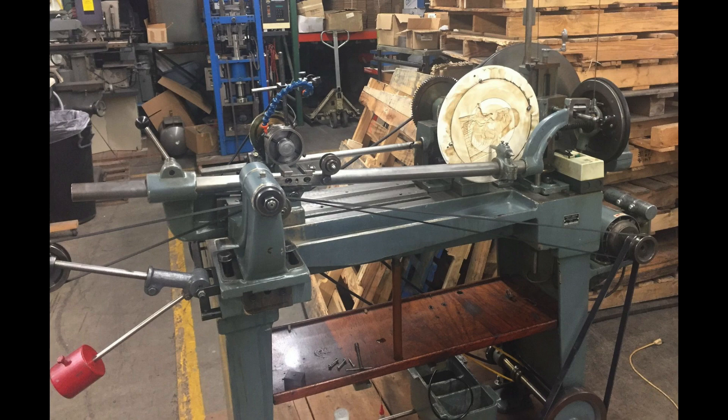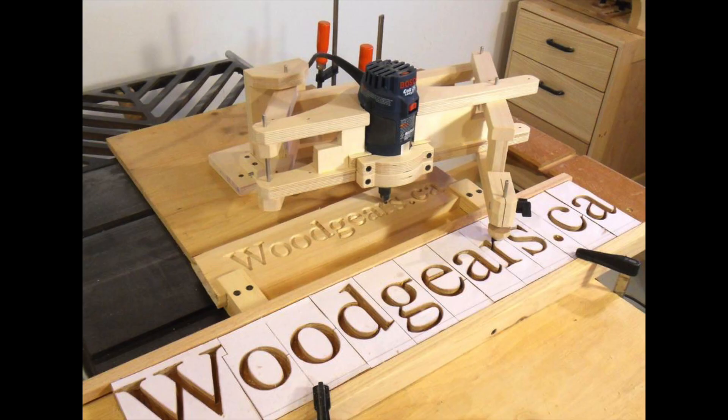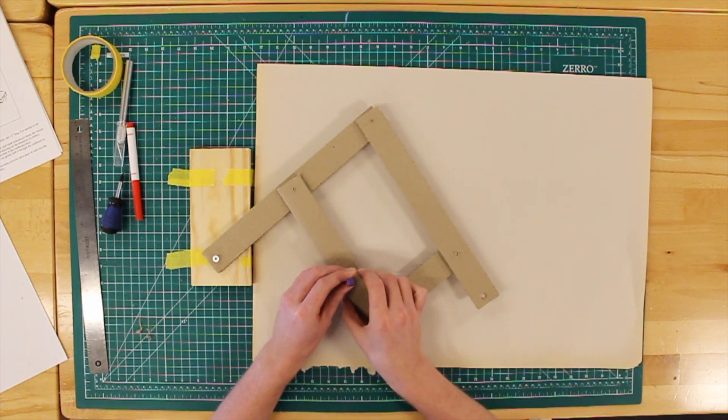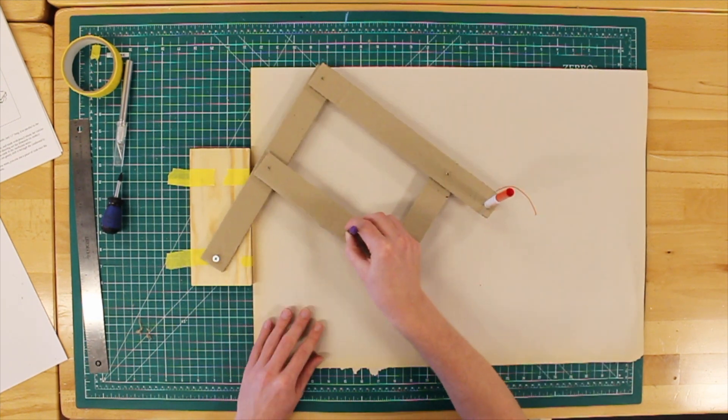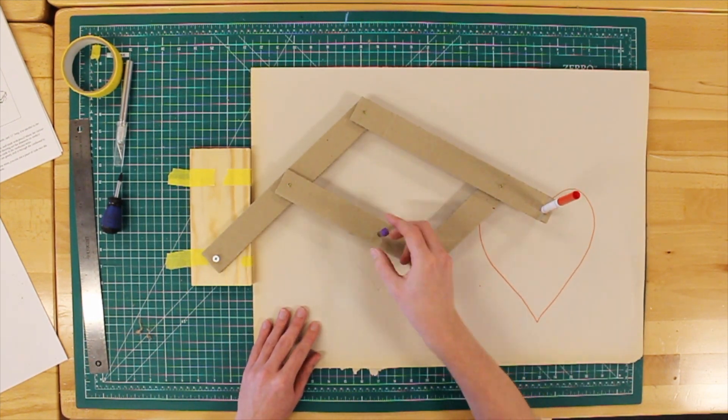Now what's a pantograph? A pantograph is a mechanical device that uses mechanical linkages arranged in a particular way to scale an image. In this video we'll be making a simple version out of cardboard. So let's get started.